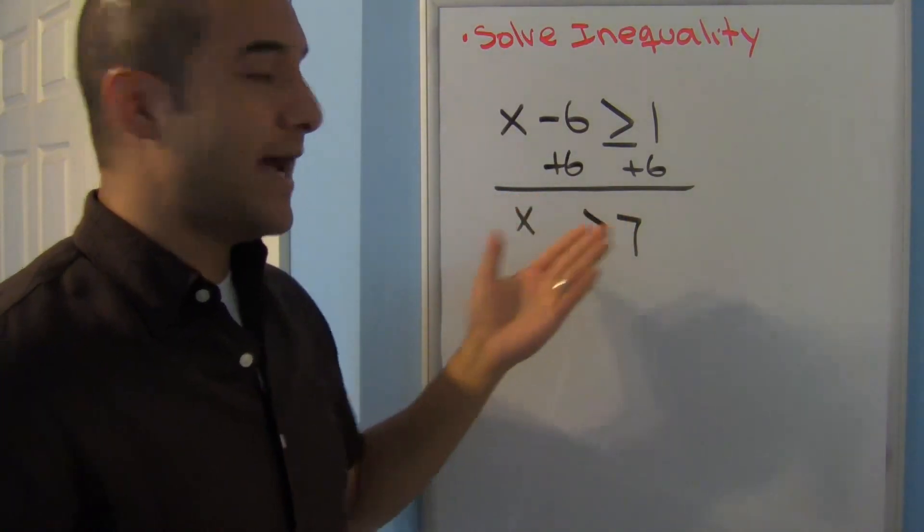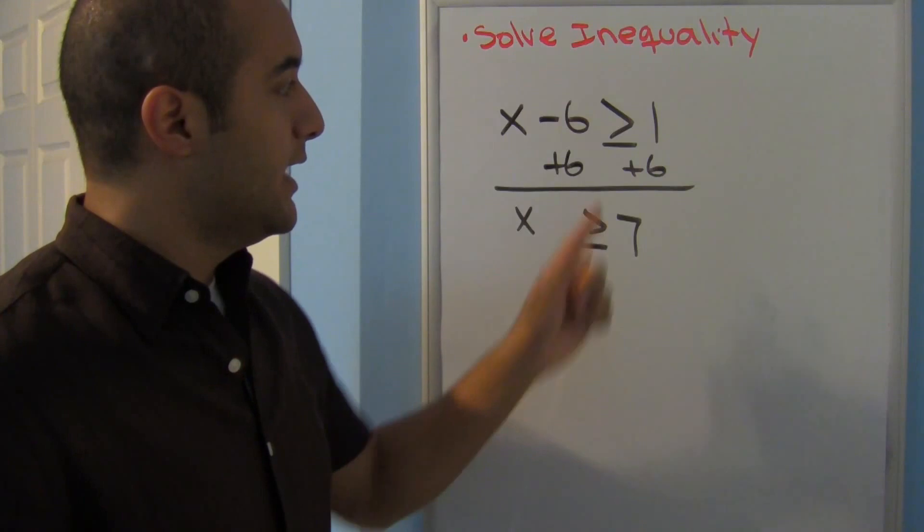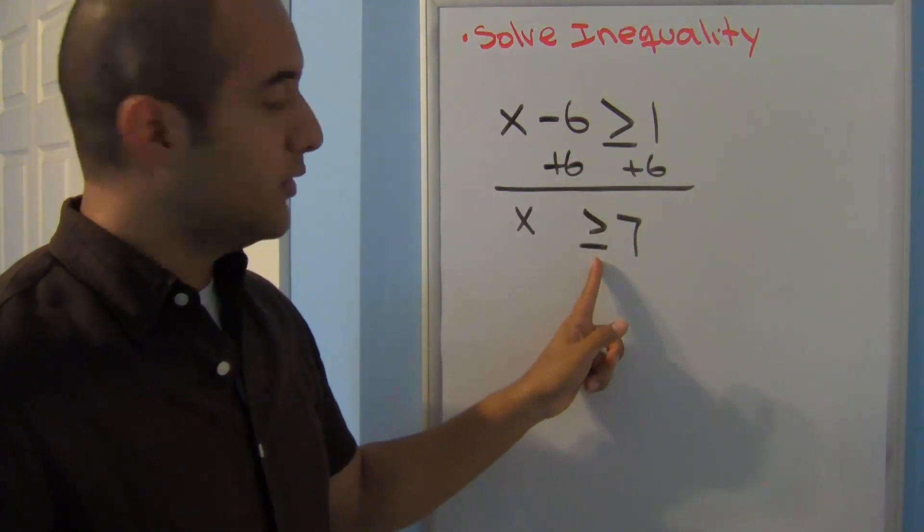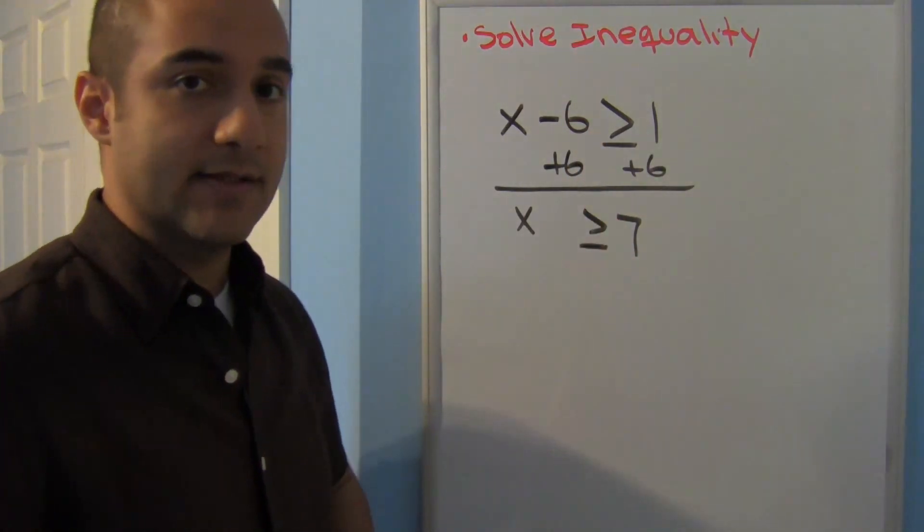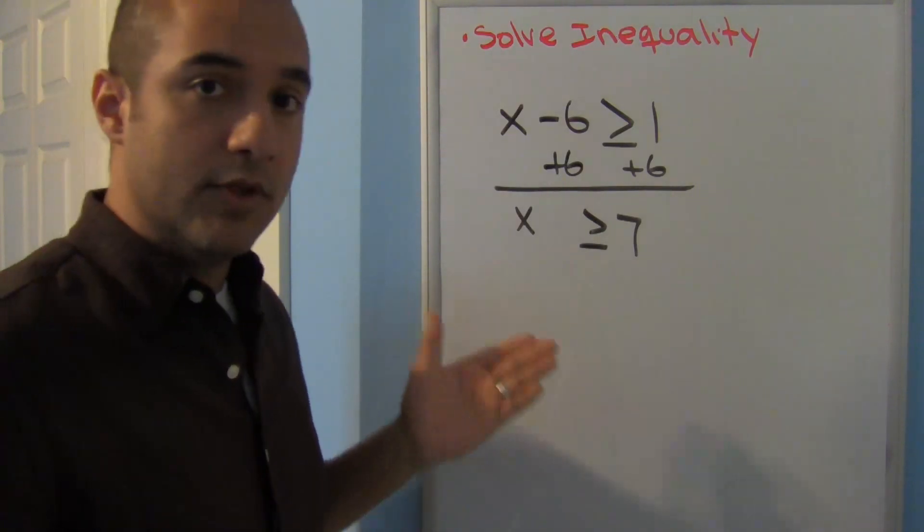So notice that I can add and subtract just like I was doing before, and I always bring down my symbol exactly as it is. So nothing new here really.